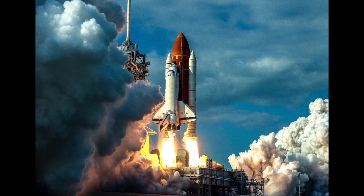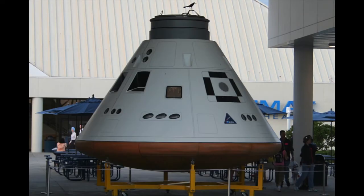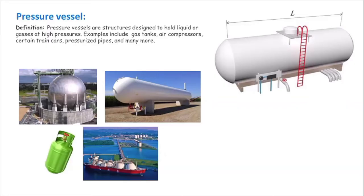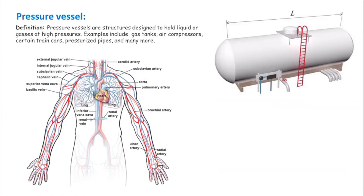For those majoring in aerospace engineering, a spaceship could be considered a pressure vessel. The internal pressure is much higher than the outside, and designers need to ensure that oxygen inside the spaceship does not escape. Generally, any element that holds liquids or gas at higher pressure can be considered a pressure vessel.